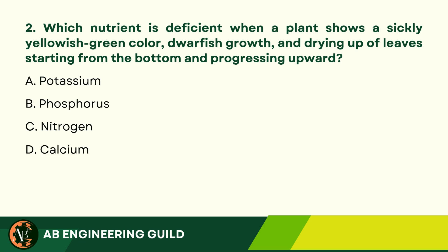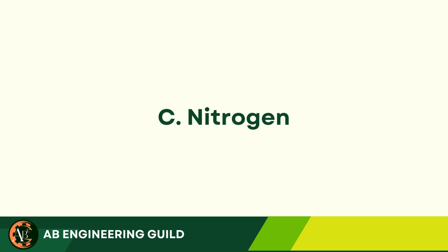Question 2: Which nutrient is deficient when a plant shows a sickly yellowish-green color, dwarfish growth, and drying up of leaves starting from the bottom and progressing upward? A. Potassium. B. Phosphorus. C. Nitrogen. D. Calcium. Answer: C. Nitrogen.